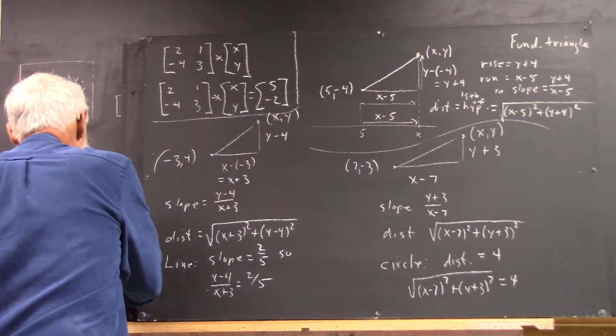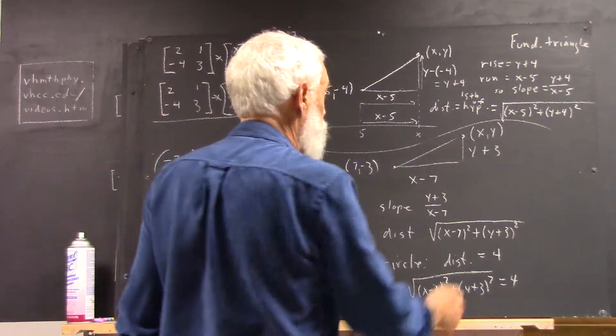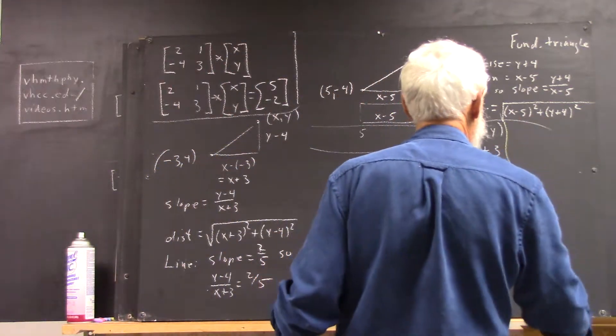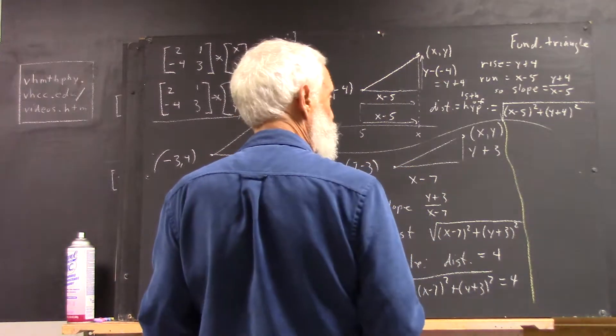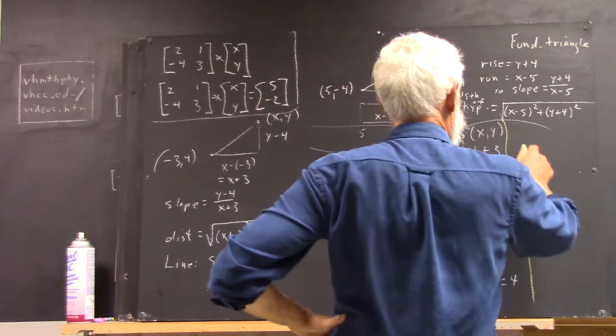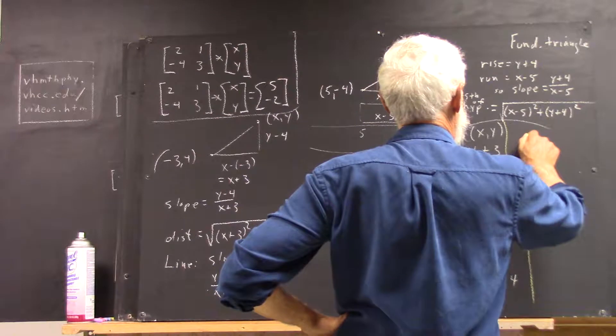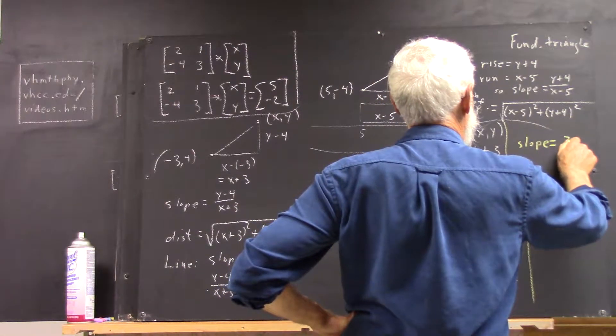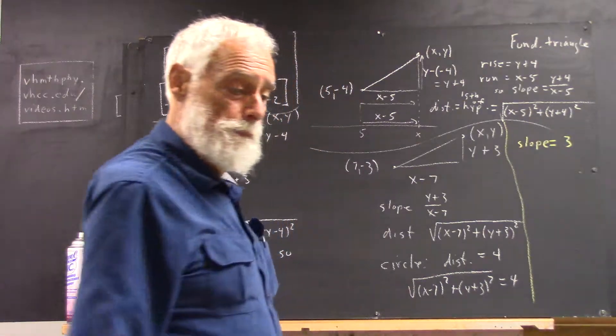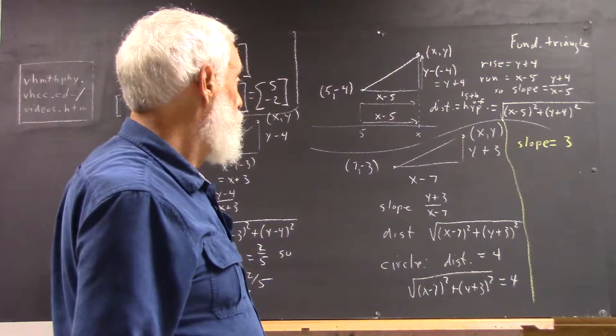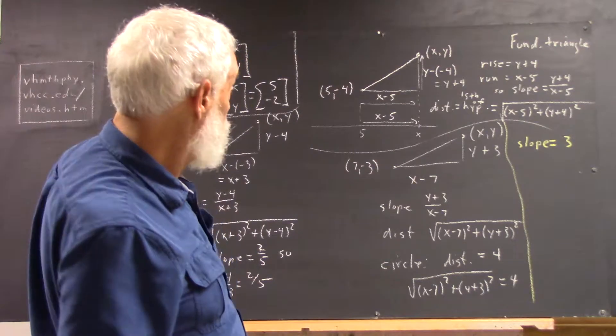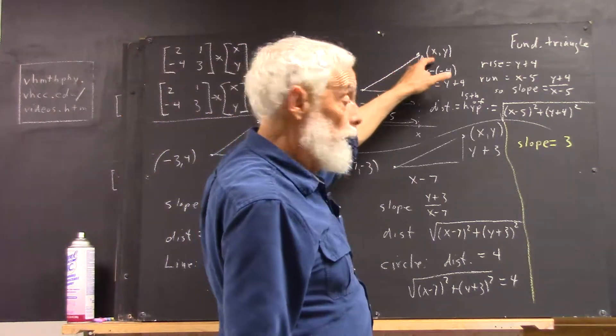Okay, well, the next question we posed, and I don't have a lot of room here, is take the statement, slope equals 3, and now write that in terms of 5, negative 4, x, and y.